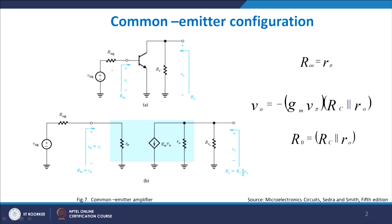Continuing from yesterday, in a common emitter configuration we have an NPN transistor — identifiable by the direction of the arrow — with a P-type base, N-type emitter, and N-type collector. There is a collector resistance RC on the collector side, an input resistance RSig, and we define Rin as the input impedance, R0 as the output impedance, V0 as the output voltage, and Vsig as the input signal voltage.